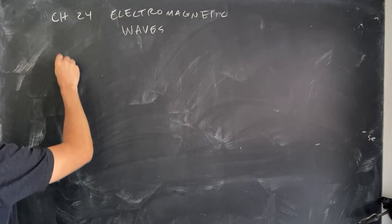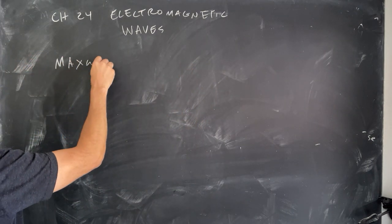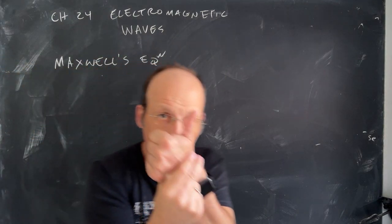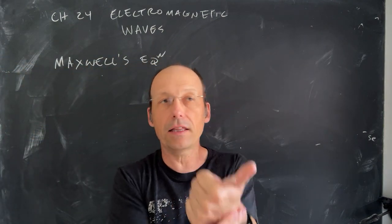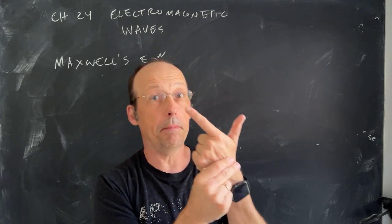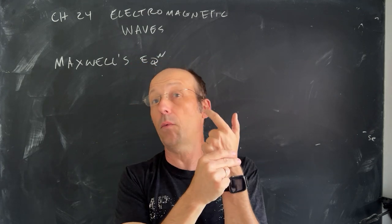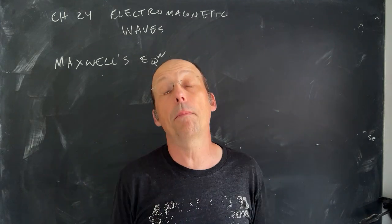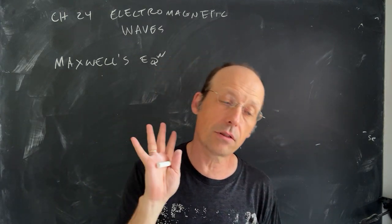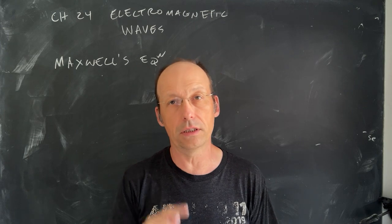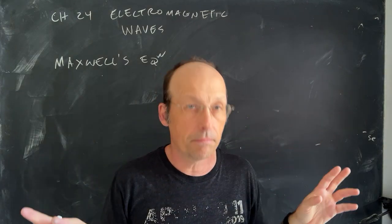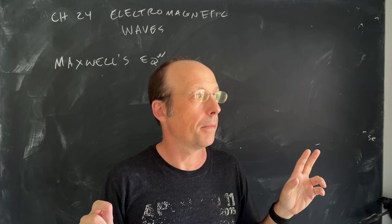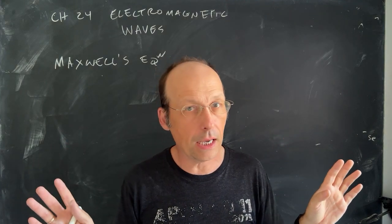Think about what we've done so far: we started off looking at what the electric field is and how to find it, then we started talking about the magnetic field, and then we looked at what happens when you change the magnetic field and how that makes an electric field. These are all part of Maxwell's equations. The math of these equations is not ready for algebra, but I'll talk about the concepts.